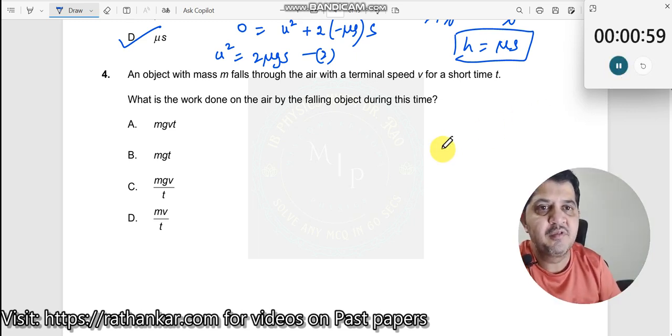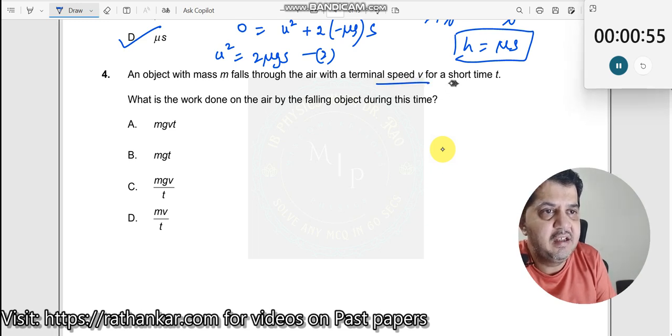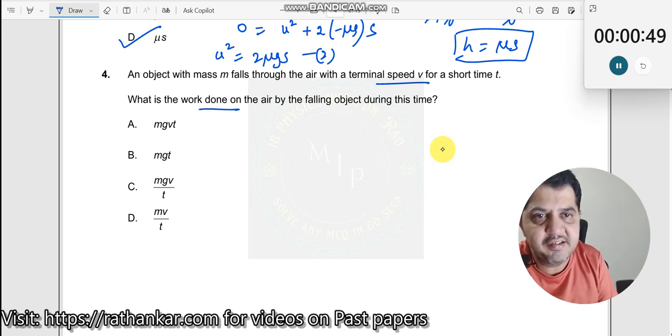Question number 4: an object with mass m falls through air with a terminal velocity v for a shorter time t. What is the work done on the air? Work done we need to find during this time.